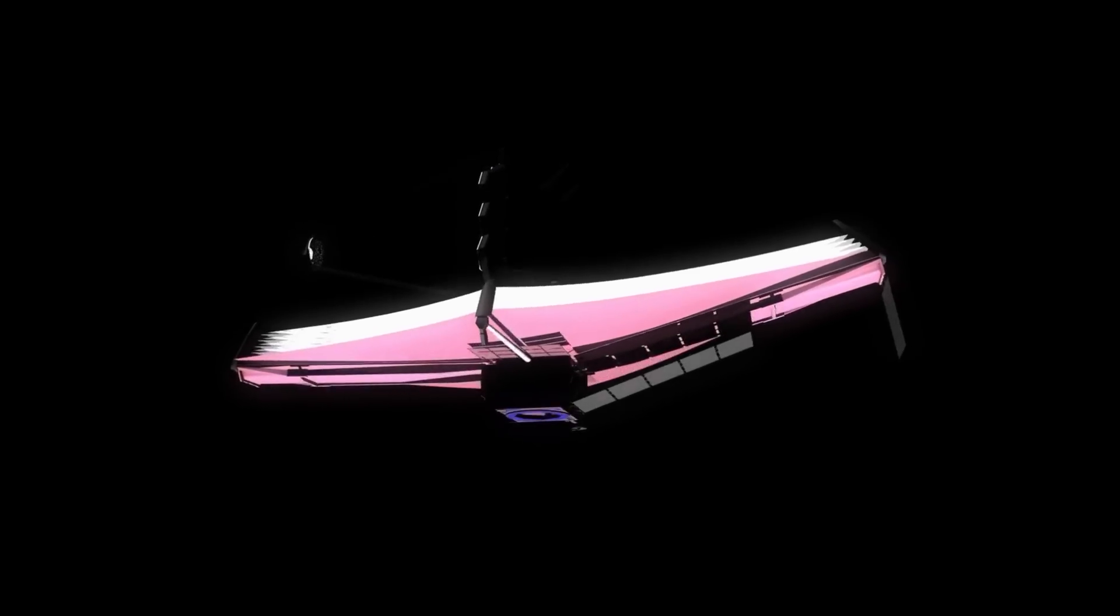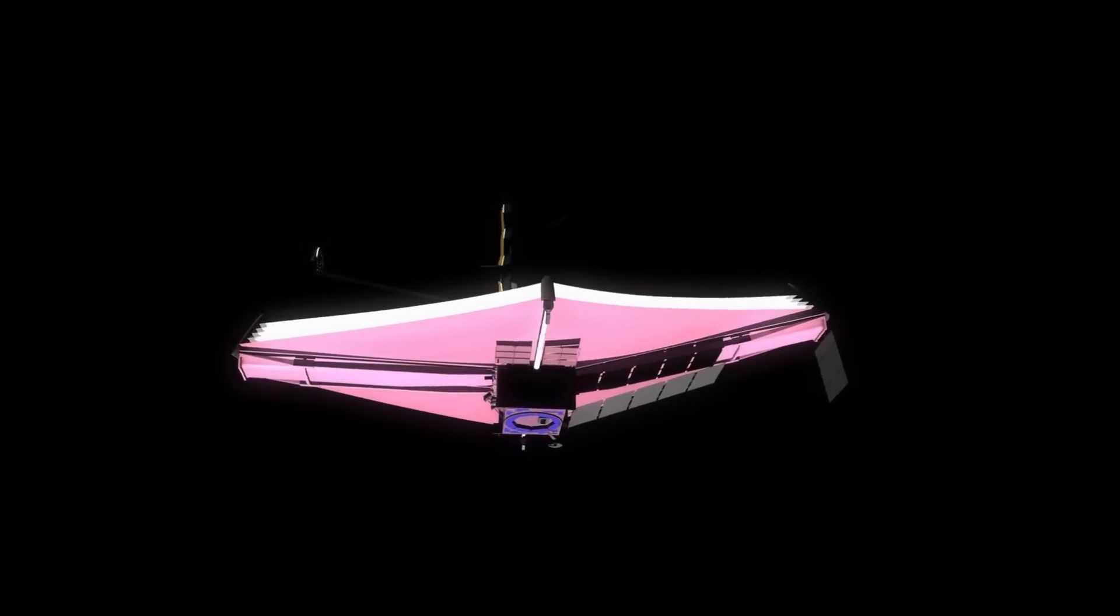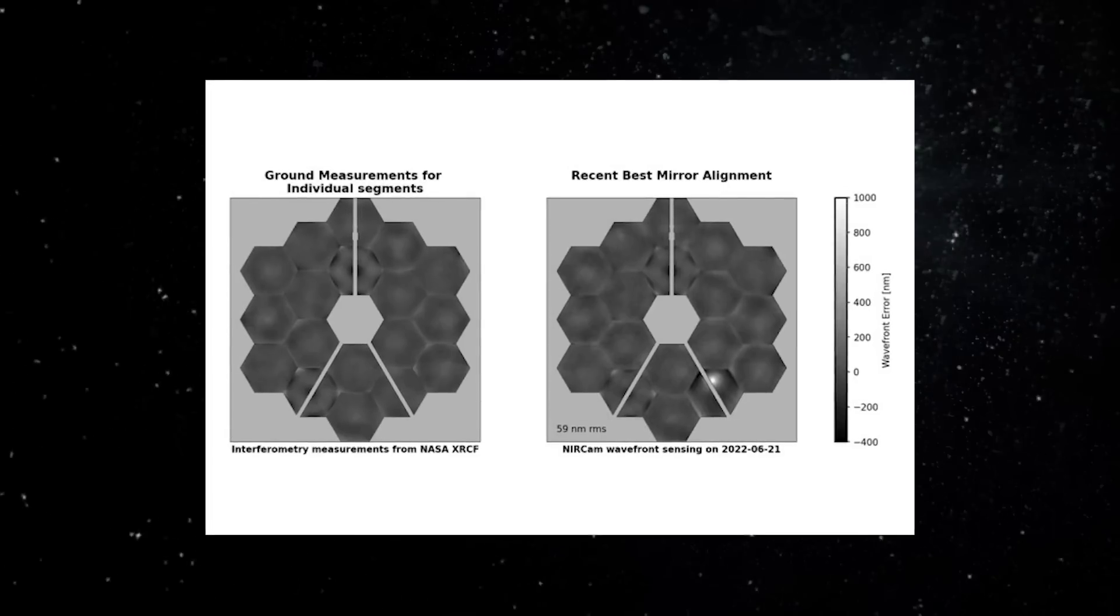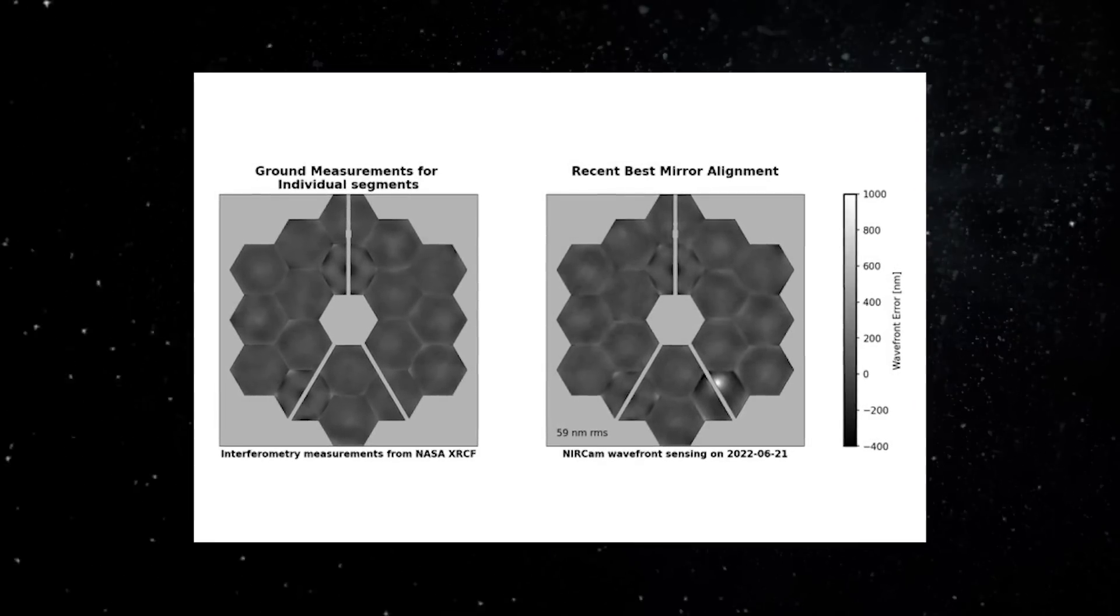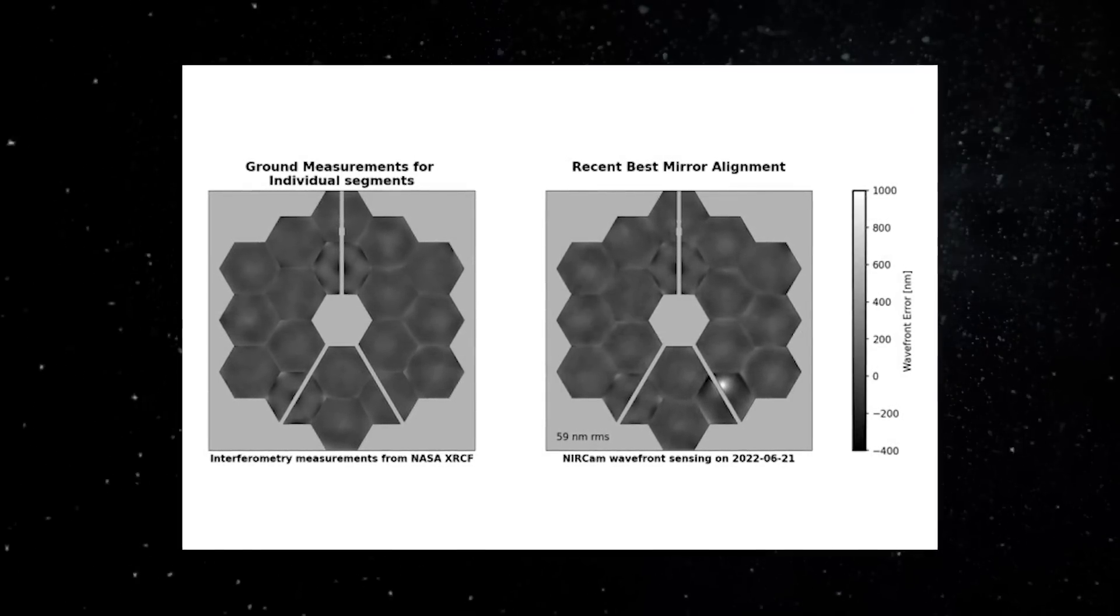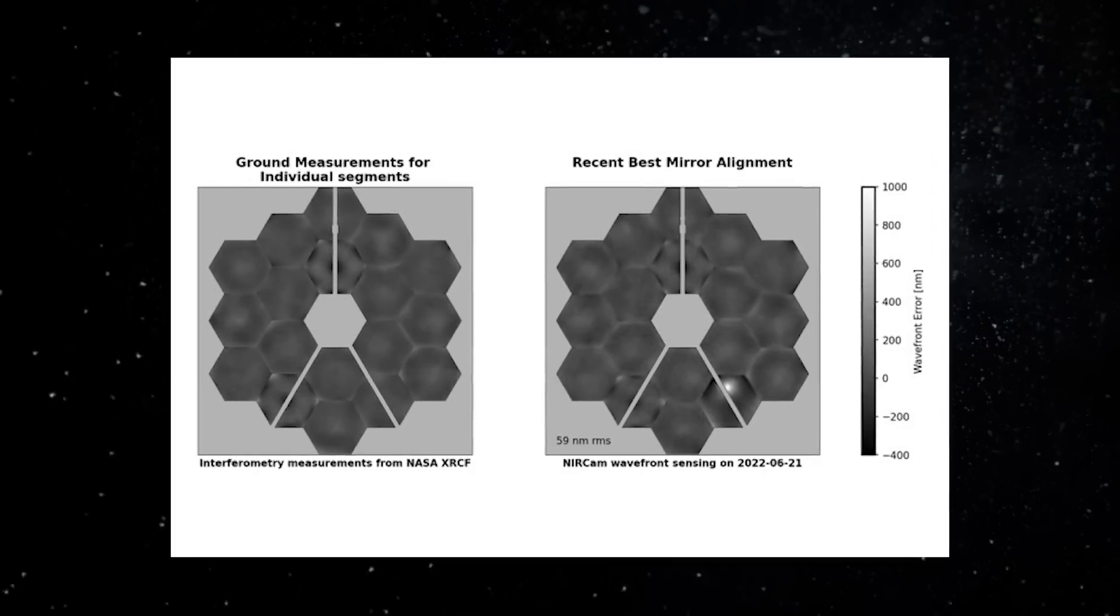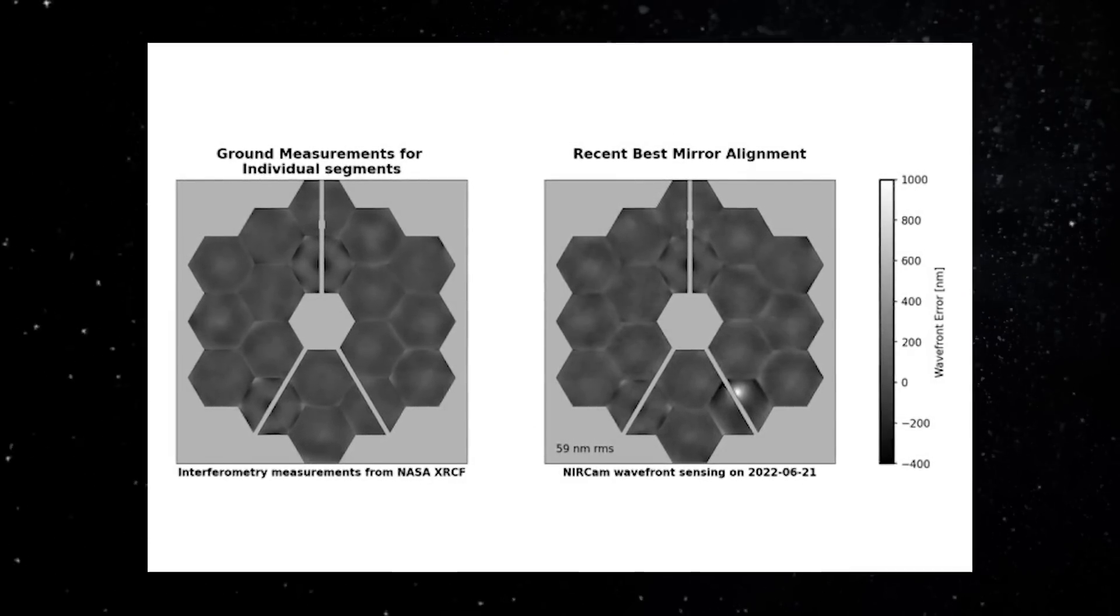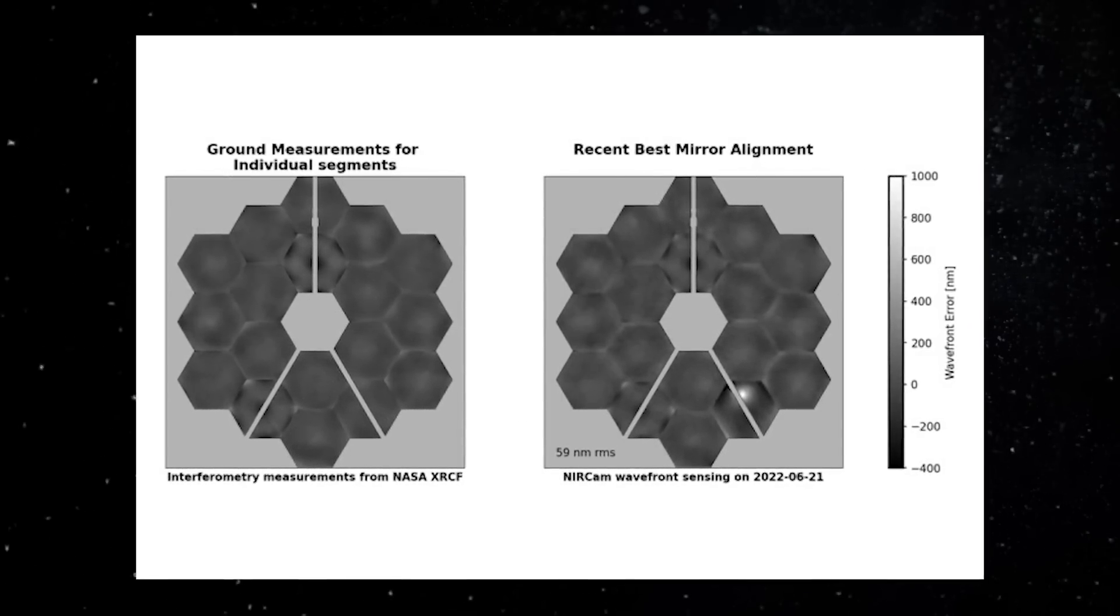Engineers predicted that the spacecraft would be impacted roughly once a month by micrometeoroids of insignificant mass. According to the report, five had insignificant impacts, adding a combined total of one nanometer to the overall wave front error. An additional 19 collisions had no discernible influence on the wave front error. However, one impact was far more significant.